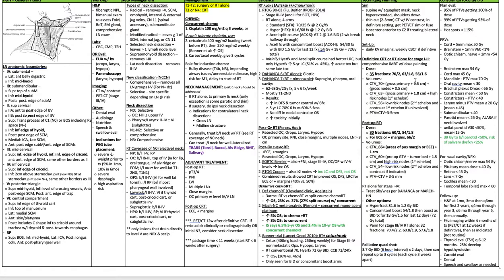Definitive volumes: CTV70 is the gross primary plus 5 mm and gross nodes plus 5 mm. CTV63 is the gross primary plus 1 cm and high-risk (first echelon) nodes. CTV56 is the low-risk nodes — second echelon and contralateral first echelon if not involved. PTV is a 3-5 mm expansion on the CTV.